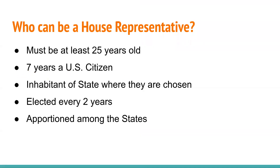Let's look at who can be a House representative. Someone running must be at least 25 years old, must have been a U.S. citizen for the past seven years, and must be an inhabitant of the state where they are elected. U.S. House representatives are elected every two years and representatives are apportioned among the states. This is all under Article 1 of the Constitution, specifically Section 2, which addresses the House of Representatives.